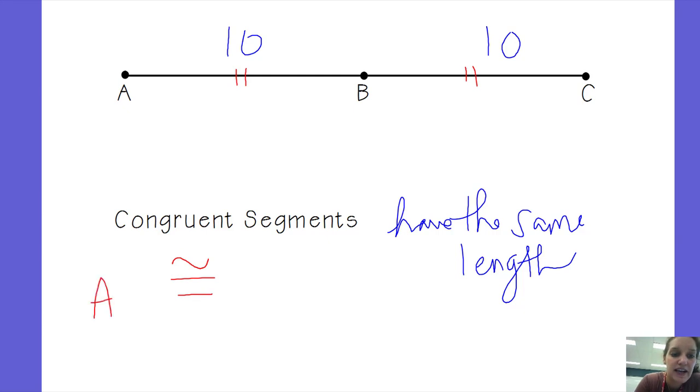So I would say that segment AB is congruent to segment BC. Notice my equal sign has a little hat on top of it. My equal sign is wearing a hat, my segments are wearing a hat. So just keep in mind, congruent means they have the same length.